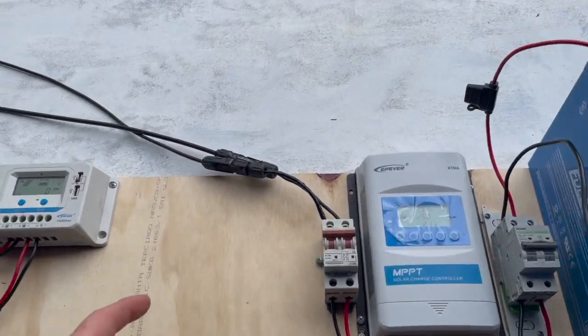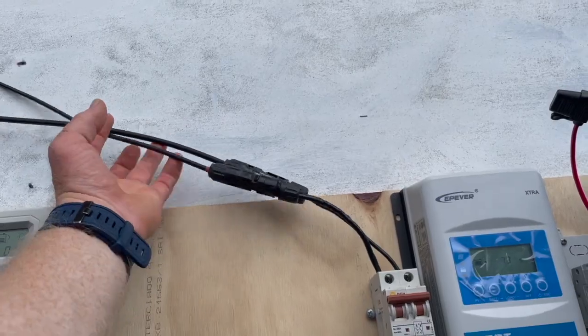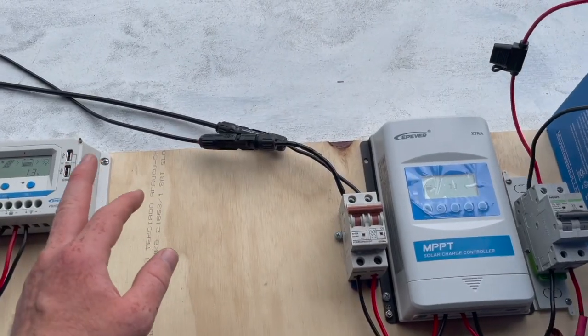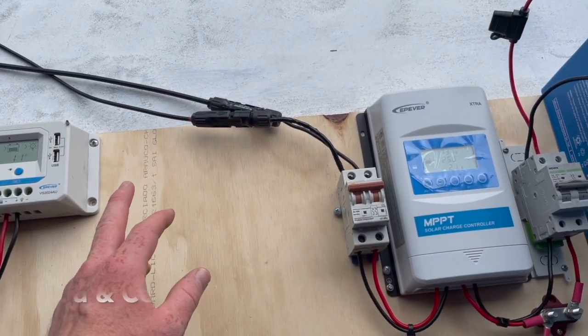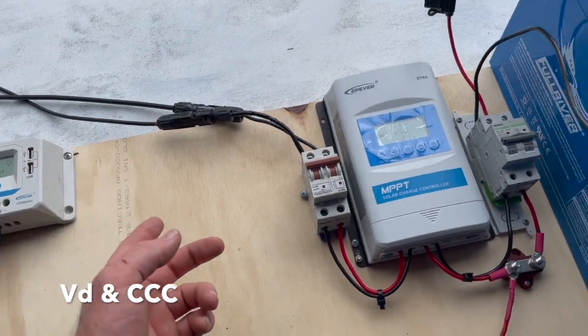What we're going to do now is run through how to size your cables for a system. The two things we want to check or calculate is voltage drop and current carrying capacity.